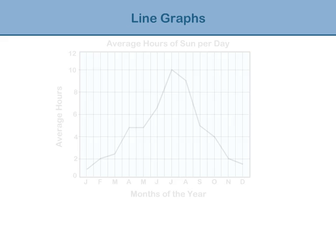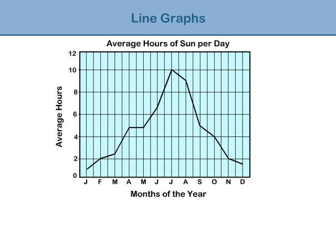Let's take a look at another line graph and see how we can use it to interpret information. This line graph is similar to the previous example, except that this time it shows the average amount of sunshine each month throughout the year.